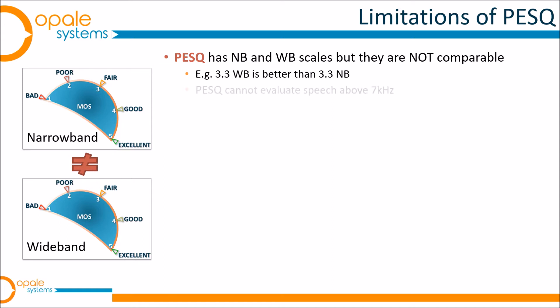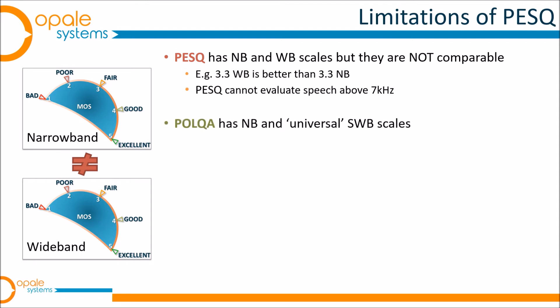That was one limitation of PESQ. The second is that PESQ cannot evaluate speech above 7 kHz. Seven kilohertz takes us to the top of the HD voice or wideband speech audio spectrum, but we already have services — Skype is a good example — and cellular services moving beyond that into the super wideband and even full band arena, covering a much higher range of frequencies.